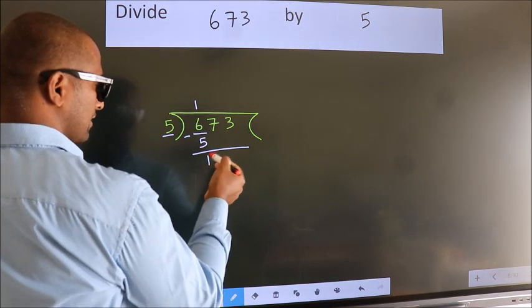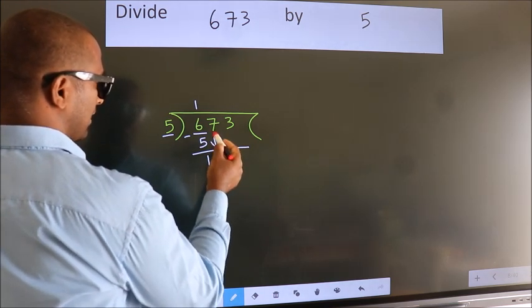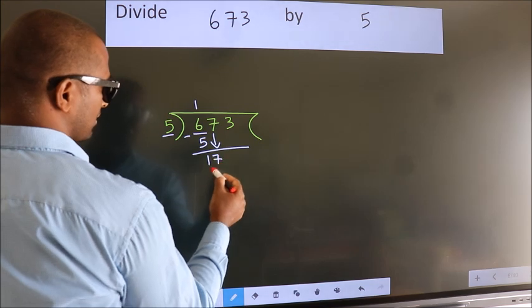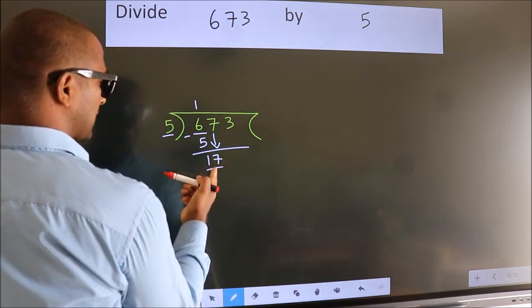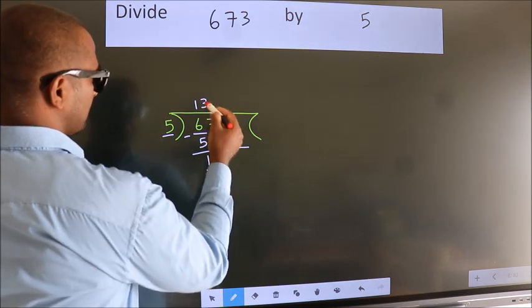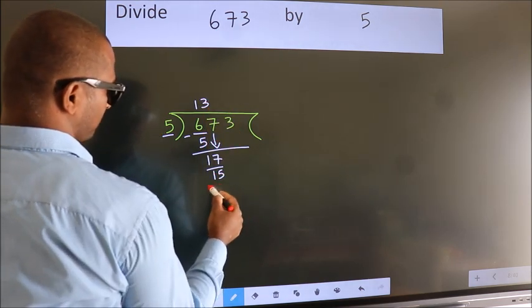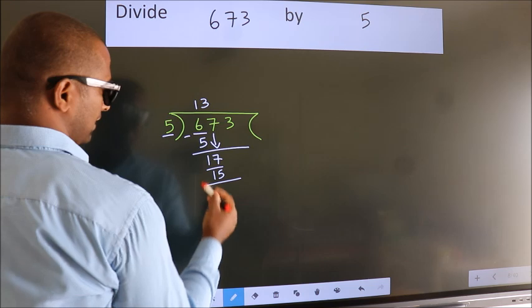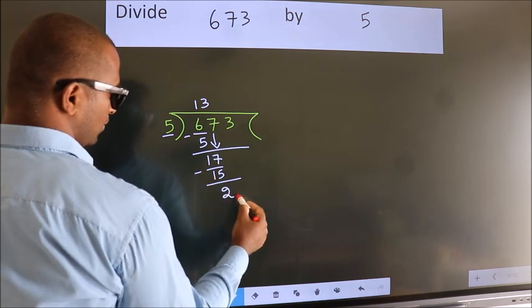After this bring down the beside number. So 7 down. So 17. A number close to 17 in 5 table is 5 threes 15. Now we subtract. We get 2.